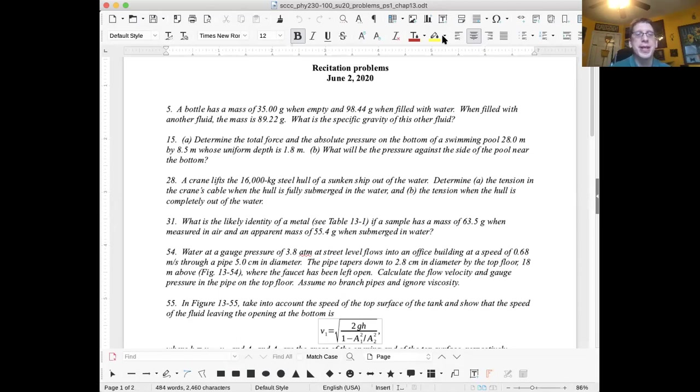Then we move on to problem number 15. For question A, determine the total force and the absolute pressure on the bottom of a swimming pool, 28.0 meters by 8.5 meters. Those are the horizontal dimensions of the pool, whose uniform depth is 1.8 meters, the vertical dimension. For part A, when you're talking total force and absolute pressure, you need to include the air as well. Figure out the pressure of the water and the air, we're going to assume at sea level. Add those two together. Then the total force, you're multiplying that by the area of the pool, the horizontal area.